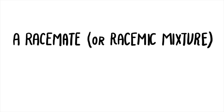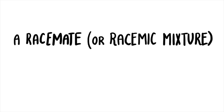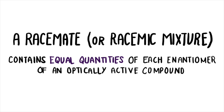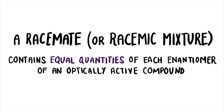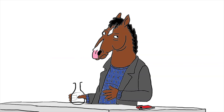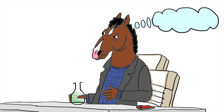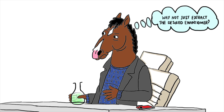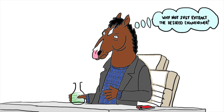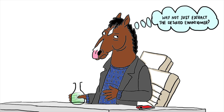Racemic mixtures contain equal quantities of each anatomer of an optically active compound. So if there are two anatomers, why can't we just extract the desired anatomer — in thalidomide's case, the sleep-inducing anatomer?